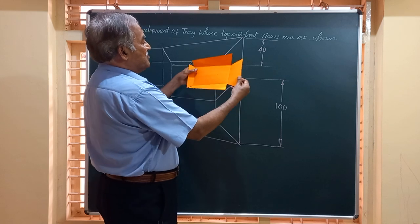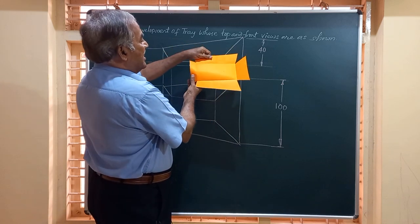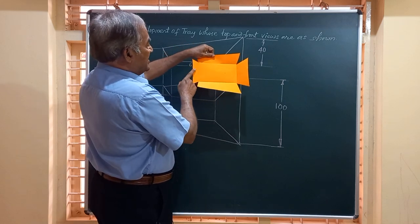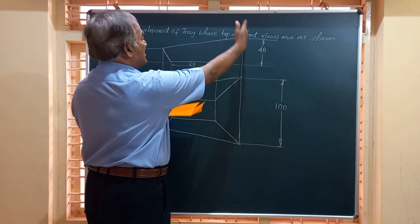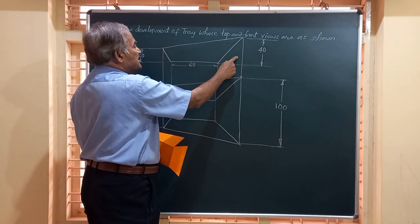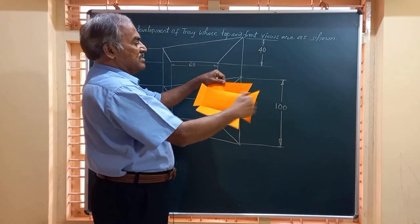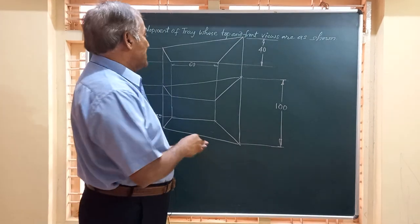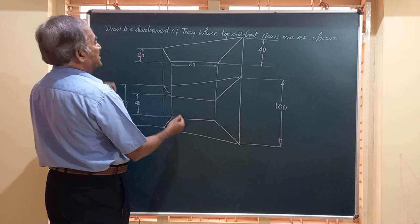Finally, you are going to get the development in this form. As seen, the development of the front and back pieces will be identical, whereas the left and right pieces are totally different because there is a taper. If they had the same height — either 20 on both sides or 40 on both sides — the joint would be symmetrical about both horizontal and vertical axes. Let us start this development from one of these corners.